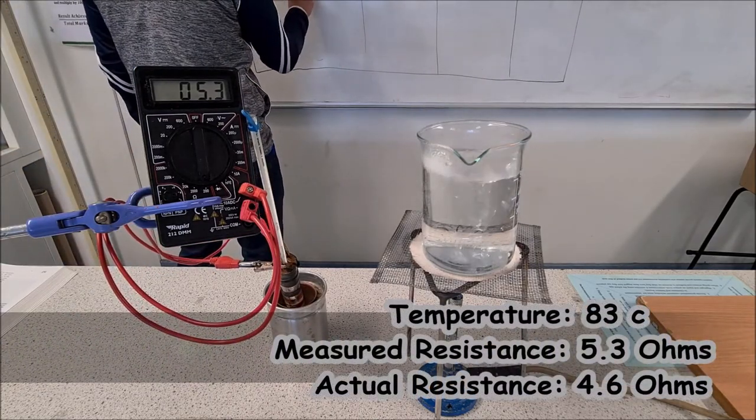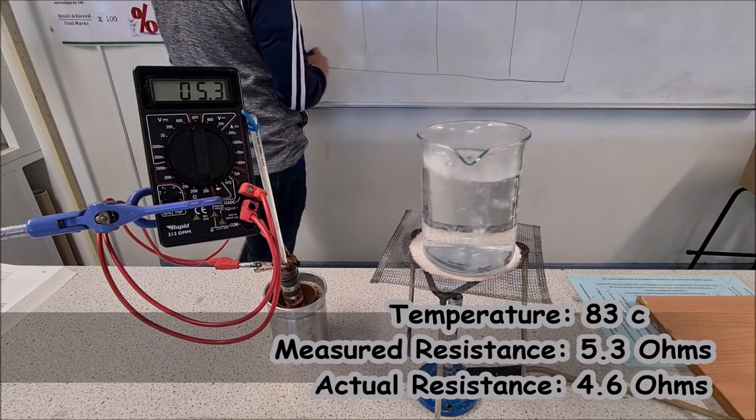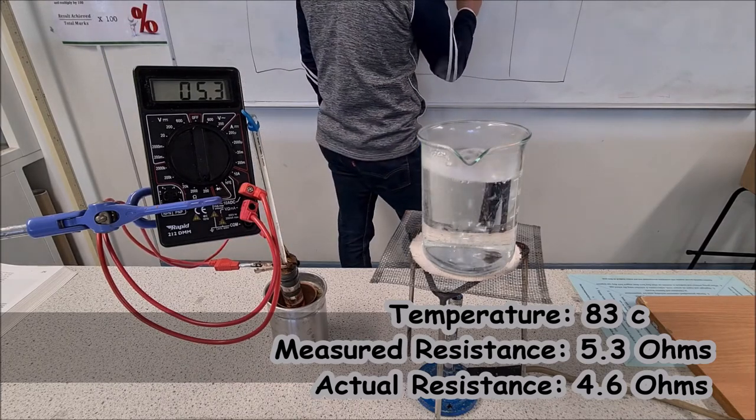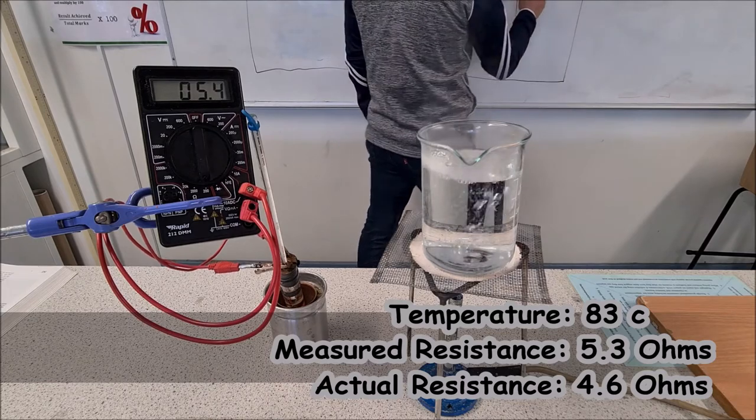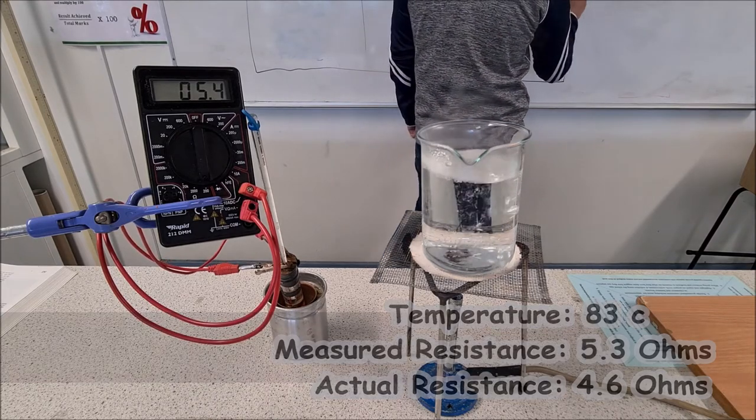We're at 83 degrees. Our resistance is 5.3 ohms. We're going up by 0.1 so that's 4.6 ohms.